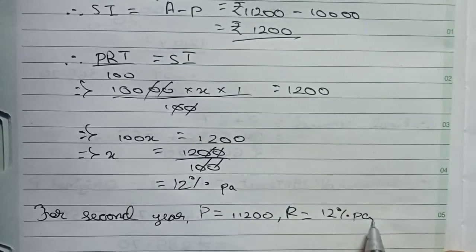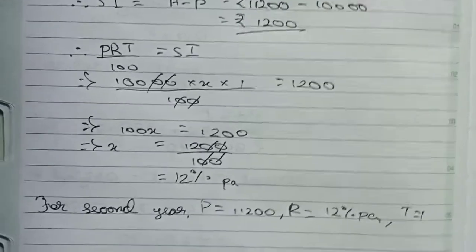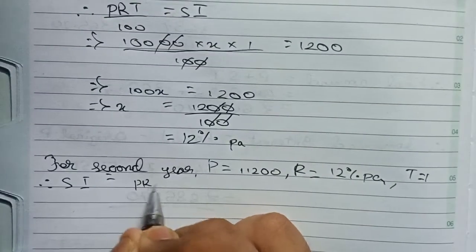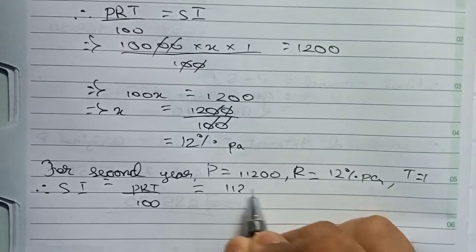Therefore, we write SI = PRT/100, which equals (11,200 × 12 × 1)/100.